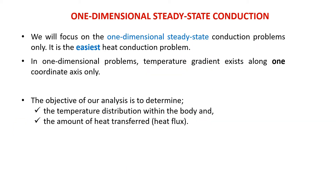In this chapter, we are going to discuss and solve the problem of 1D steady state conduction. As it is the easiest heat conduction problem, in 1D problems, the temperature gradient exists along one coordinate axis only, either in the x axis or in the y axis. The objective of our analysis is to determine the temperature distribution within the body and the amount of heat transferred, known as heat flux.